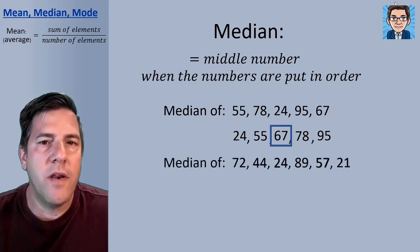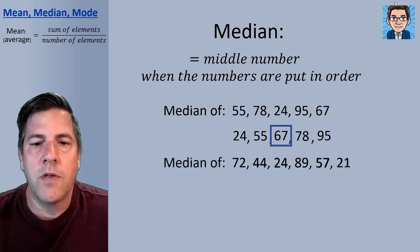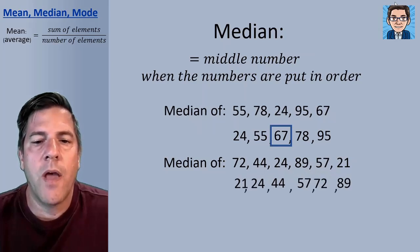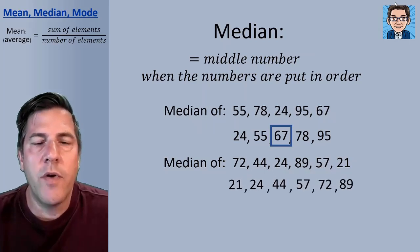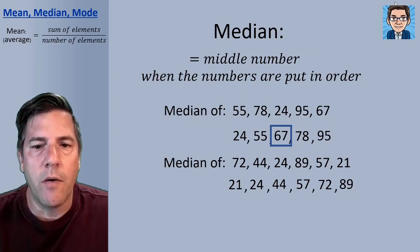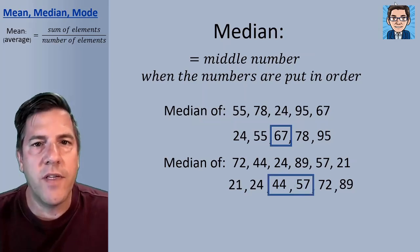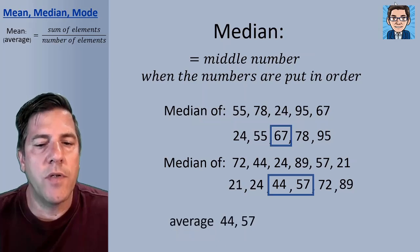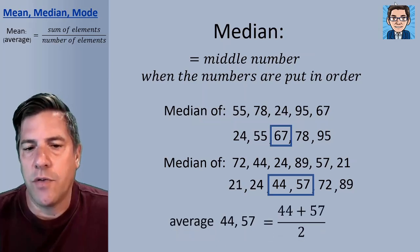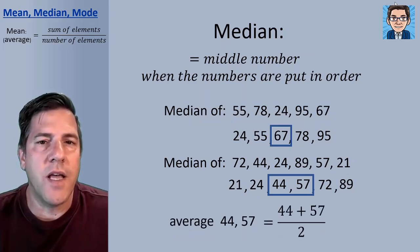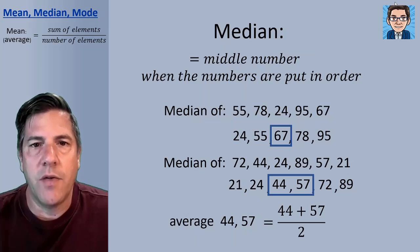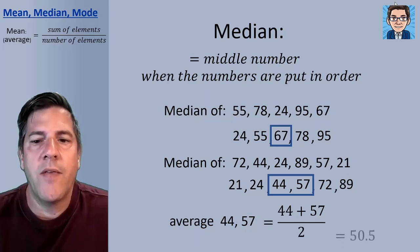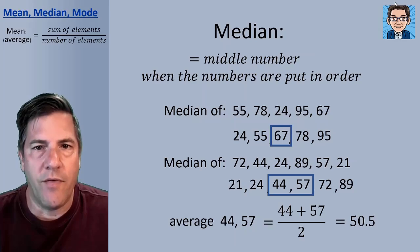Now sometimes we're going to have an even number of elements. So if we rearrange these numbers and look for the middle number, there is no one single number in the middle — we've got 44 and 57 both in the middle. In a case like this, we just take those two numbers and find the average of them. So we take 44 and 57, add them up and divide by two — that's the number halfway between 44 and 57 — and that gets us a median of 50.5.